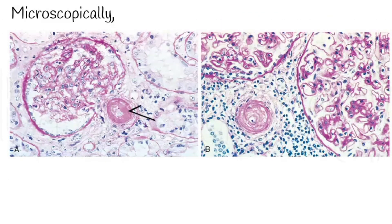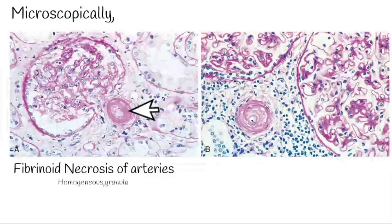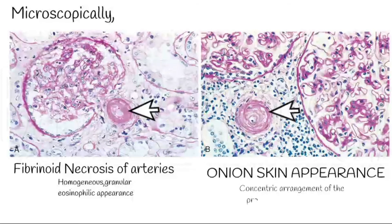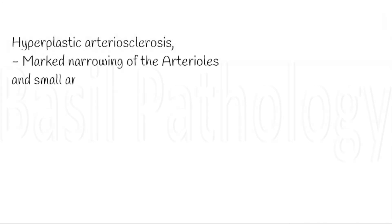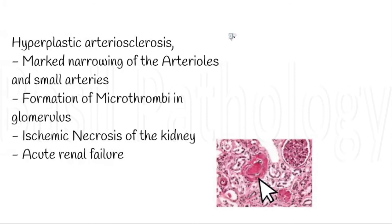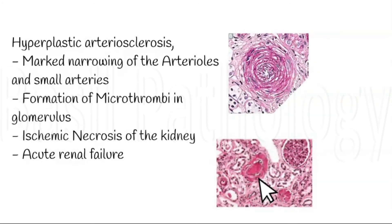Microscopically, the prominent features are fibrinoid necrosis of the arteries, which appears as a homogenous granular eosinophilic appearance on the vessel wall. Also seen is an onion-skin appearance of the blood vessels due to concentric arrangement of proliferated intimal smooth muscle cells. This leads to marked narrowing of the arterioles and small arteries, forming microthrombi in the glomerulus, resulting in ischemic necrosis and acute renal failure.